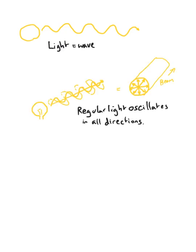We can agree that light is a wave and sometimes a particle, but let's focus on the wave part. Regular light oscillates in all directions. It's a beam with waves in 360 degrees.